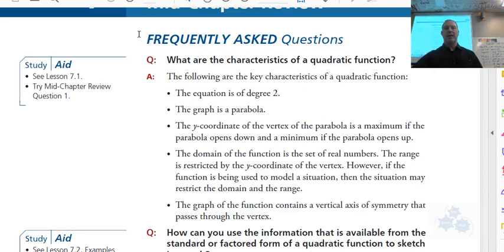All right, so a quick review for Chapter 7, Foundations of Math 20, Chapter 7. In 7.1, we talked about characteristics of a quadratic function.